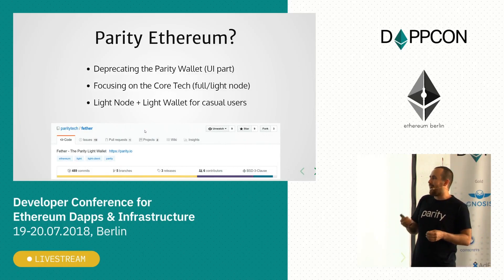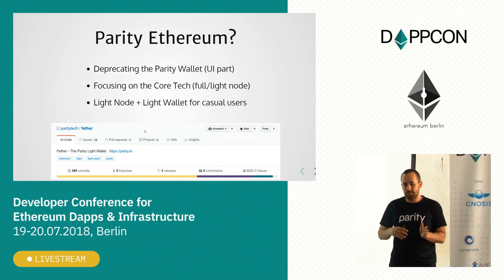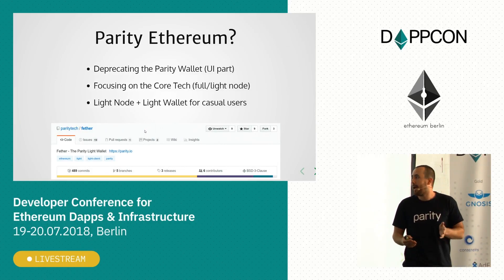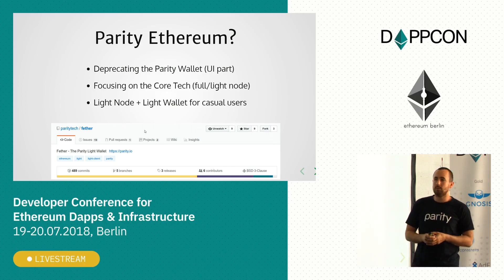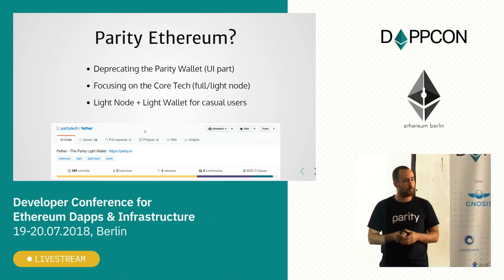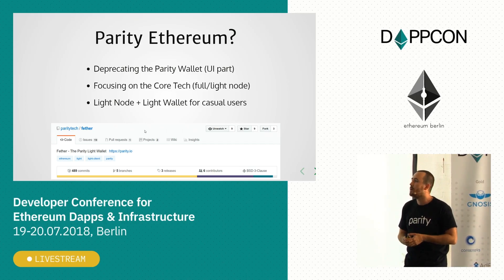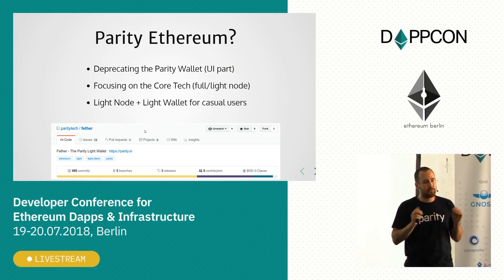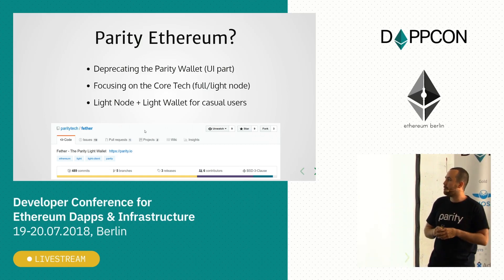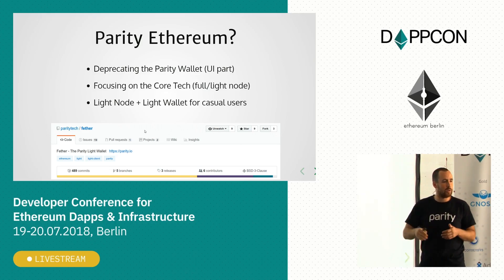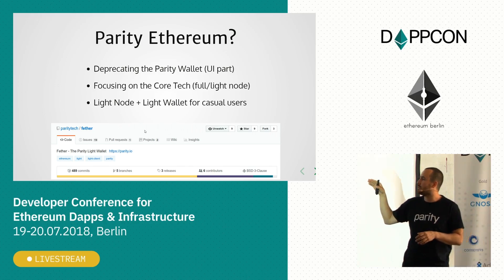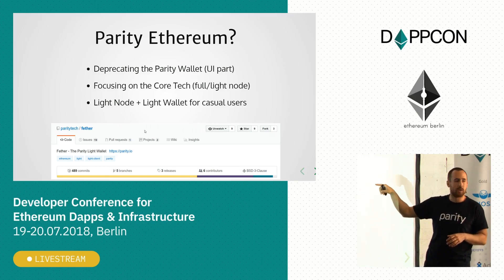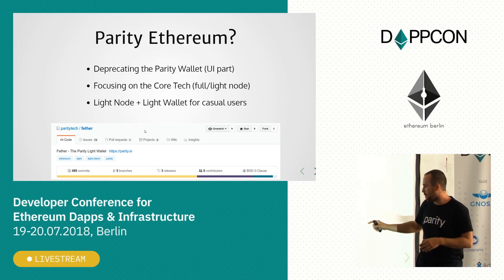At Parity Technologies, we believe that light clients will be a really important part of the future of decentralized networks, and this is reflected in our latest actions and releases. As you may have noticed, in Parity Ethereum we have actually deprecated the Parity wallet — the UI part is a separate application right now. We are focusing more on the core technology: running a full node for infrastructure-level providers, and running a light node for casual users on desktops or laptops. And pretty soon, within a couple of months, we are going to be releasing a new solution called Feather — a light node and a light wallet together. You can go to GitHub to see how it works and test it already.